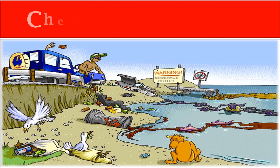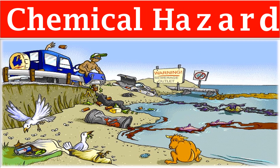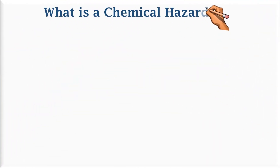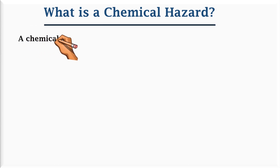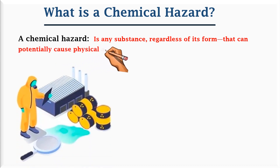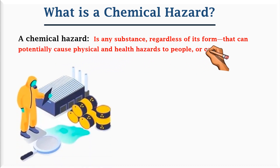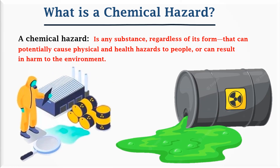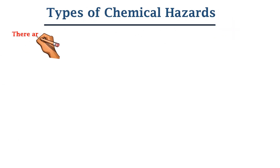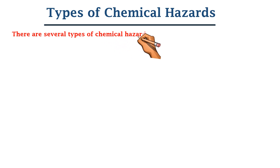Hello friends. In this video, we are going to understand about chemical hazards from the workplace. What is a chemical hazard? A chemical hazard is any substance, regardless of its form, that can potentially cause physical and health hazards to people or can result in harm to the environment.